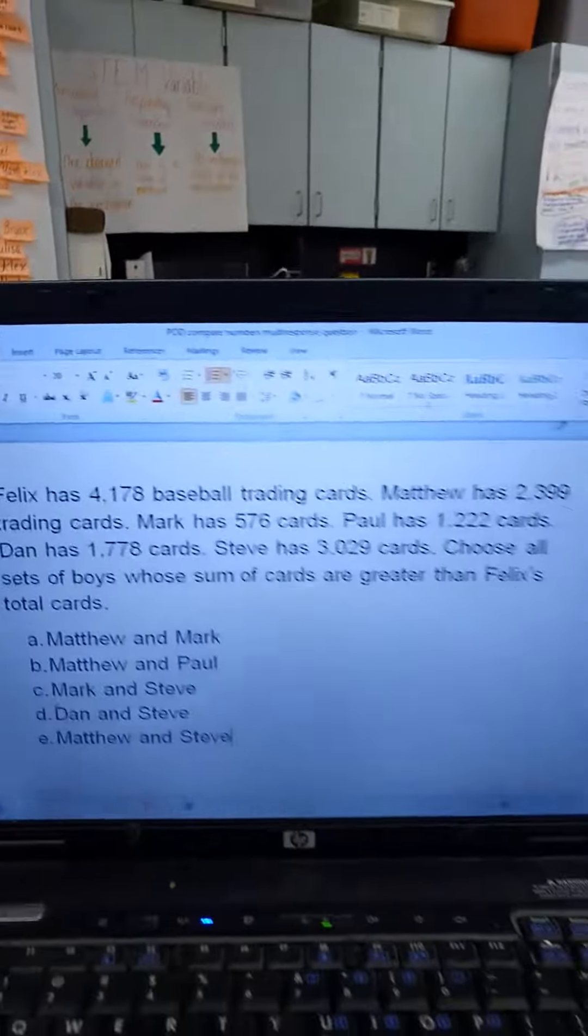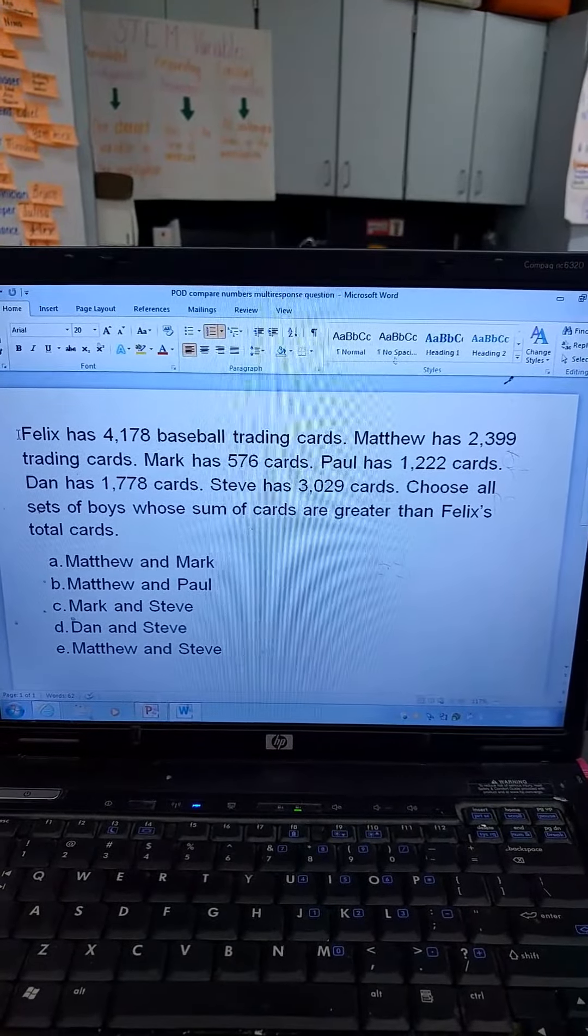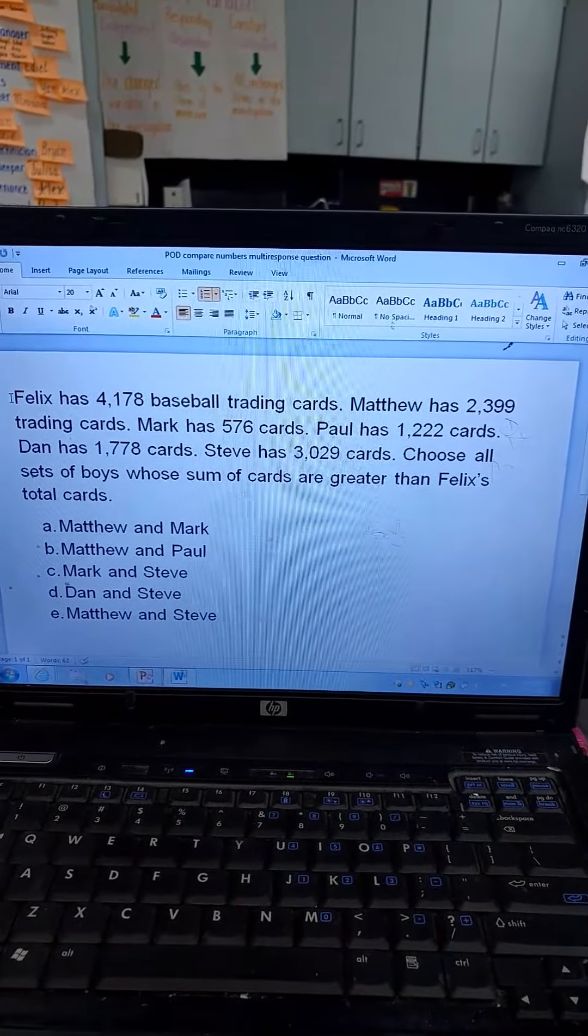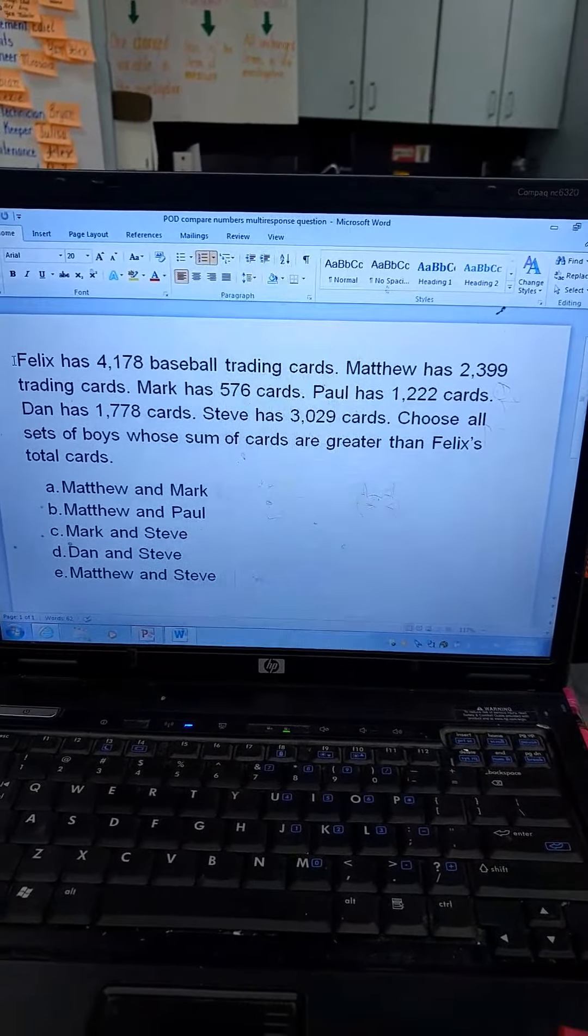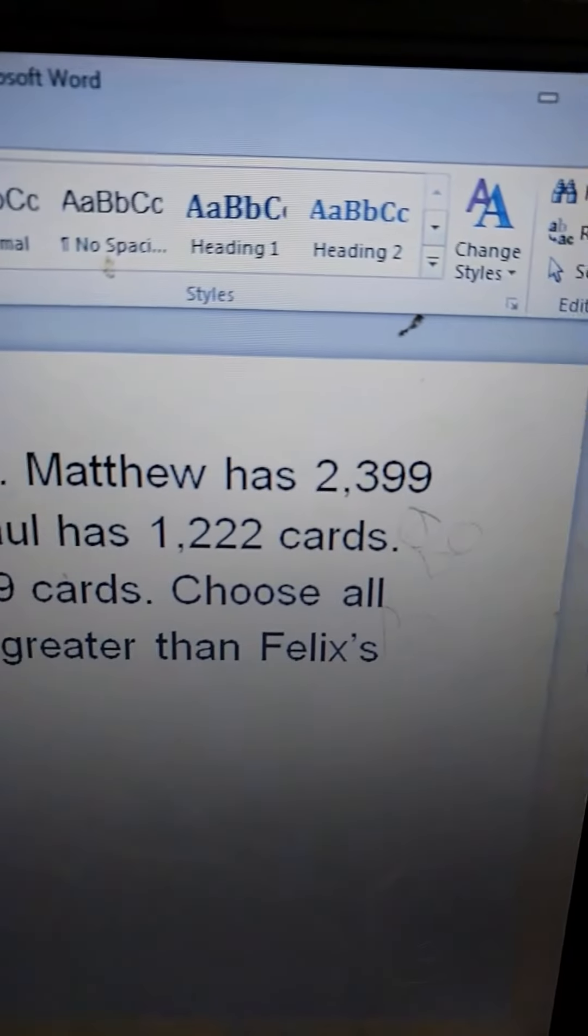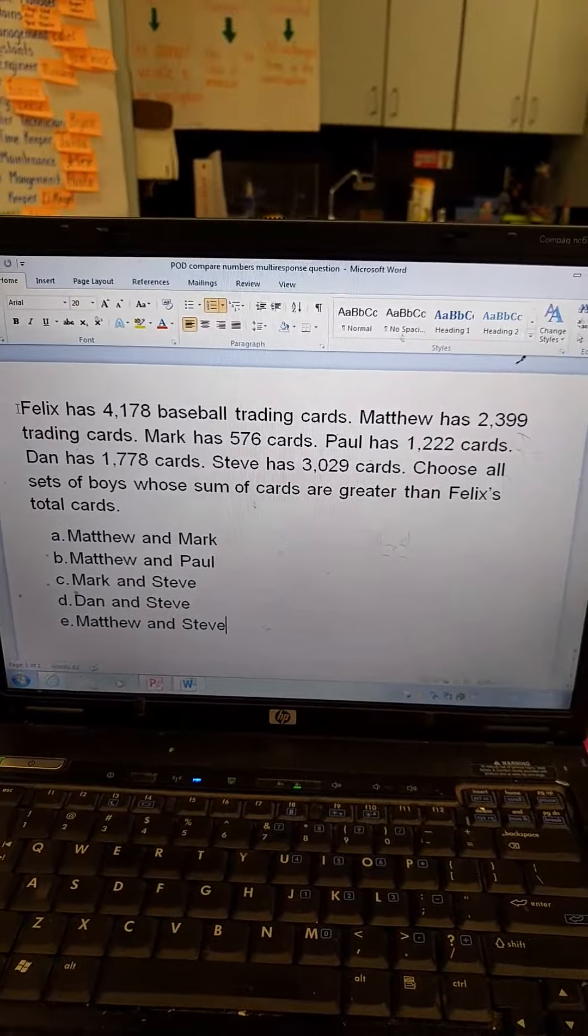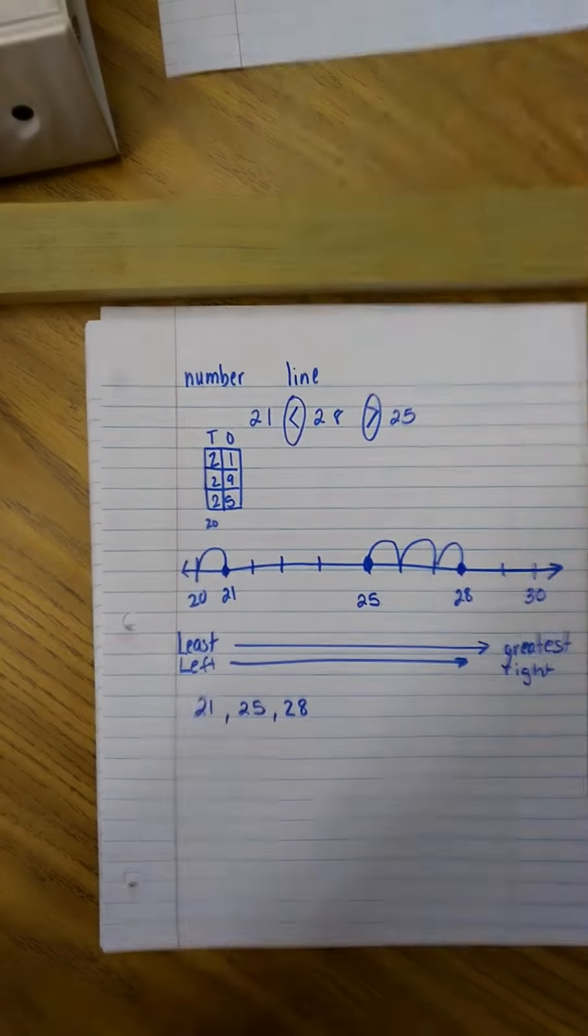So here's the problem. Felix has 4,178 baseball trading cards. Matthew has 2,399 trading cards. Mark has 576 trading cards. Paul has 1,222 cards. Dan has 1,778 cards. Steve has 3,029 cards. Choose all sets of boys whose sum of cards are greater than Felix's total cards. So that choose all, that right there, tells me that it's multi-response and I should be picking more than one answer. And those are the boy option choices. So they have to figure out whether those boys' cards equal more than Felix who has 4,178. So that was part of their multi-response problem of the day that was towards their lesson.